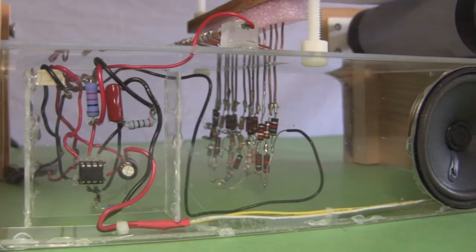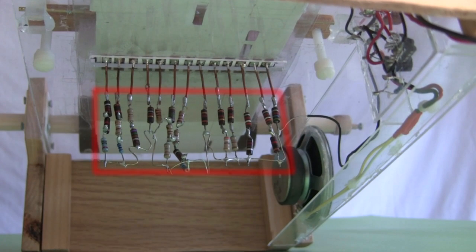Well, the frequency also depends on the resistance of these other resistances under here. Notice that there are a whole bunch of parallel lines of these resistors. In fact, there are 13 of them, one for each of the 13 frequencies, or musical notes, that this player can play.